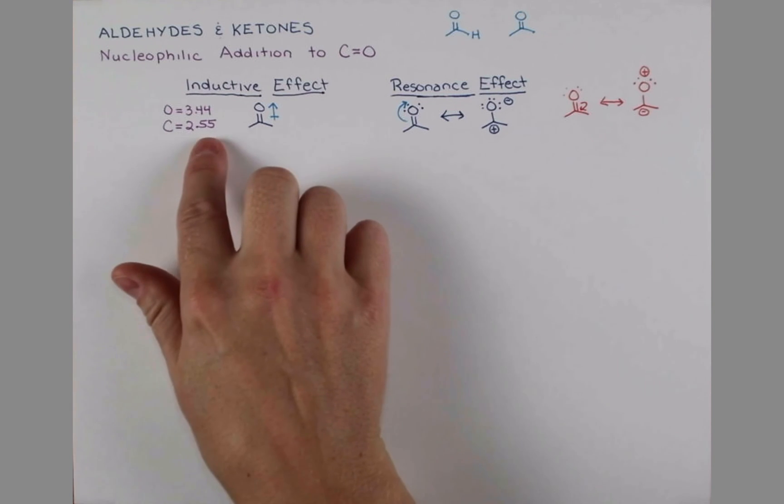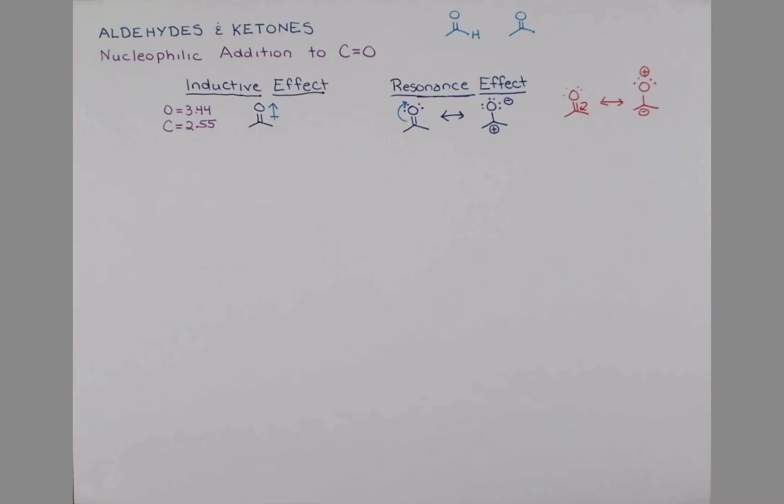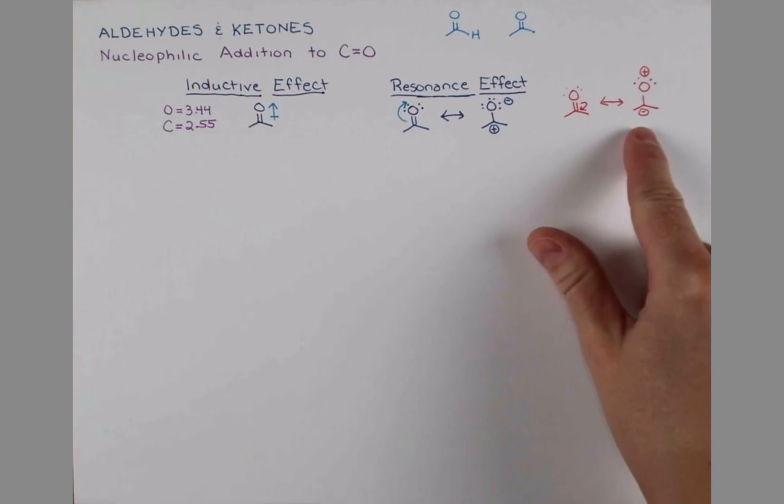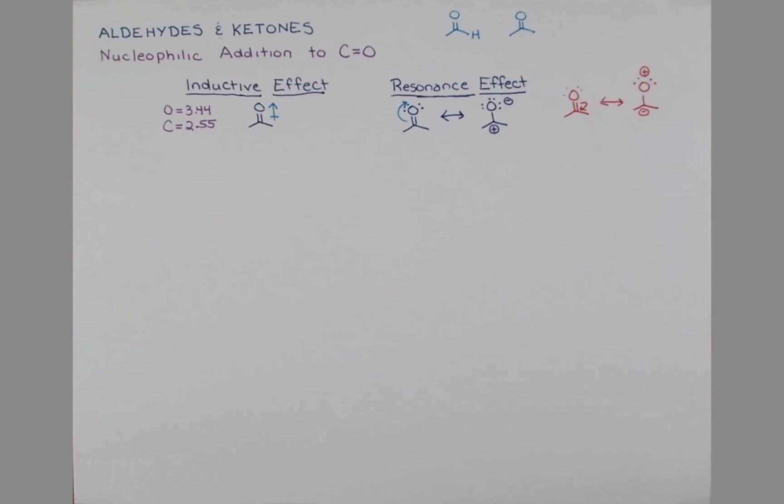If we look back at our electronegativities, oxygen is the more electronegative atom. So when drawing resonance, we want to put negative charge on the more electronegative partner in this double bond. That's oxygen and we've given it a positive charge. Carbon, the less electronegative element, bears a negative charge. So this is incorrect, and I'm just going to put a little X over it so we can forget that that ever happened.